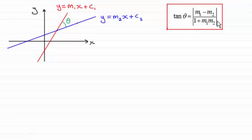It was given by this formula here: tan θ equals the modulus of m1 minus m2 all divided by 1 plus m1 m2, where m1 and m2 were the gradients of the two lines that you see here.